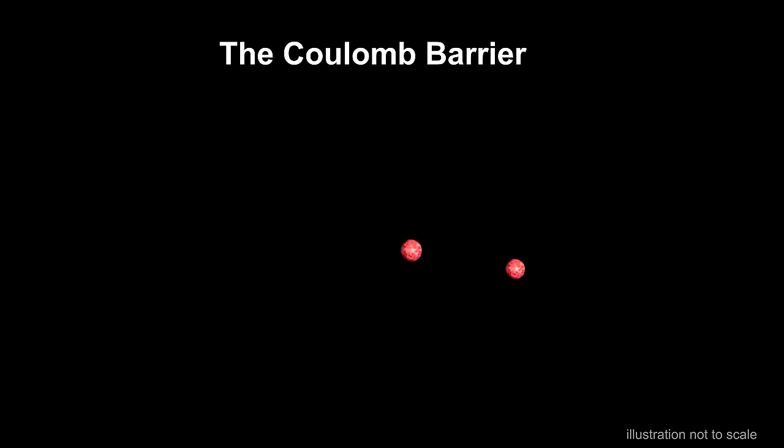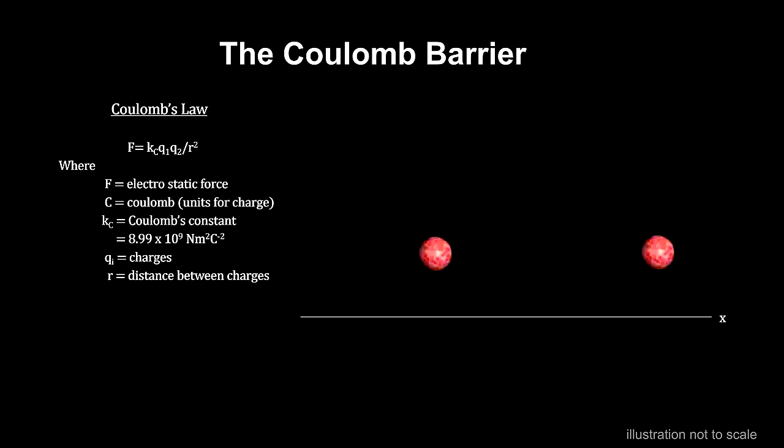To understand why the vast majority of proton-proton collisions in our sun don't result in fusion, even though they are colliding at incredible speeds, we need to examine the strength of the electrostatic force separating them. According to Coulomb's law, two particles with the same charge will repel each other with a force that is proportional to the product of their charge and inversely proportional to the square of their distance from each other, very much like gravitational force.